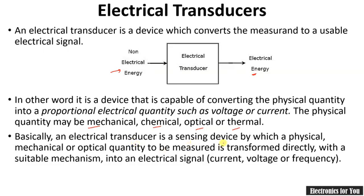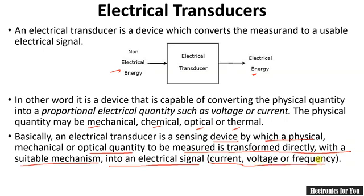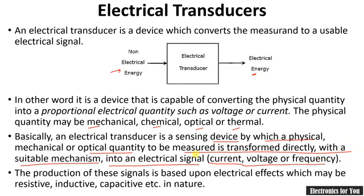An electrical transducer is a sensing device by which a physical, mechanical, or optical quantity to be measured is transformed directly — with a suitable mechanical mechanism — into an electrical signal such as current, voltage, or frequency. The production of these electrical signals is based on the electrical effect, which may be resistive, inductive, or capacitive in nature.